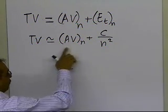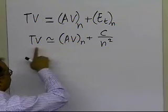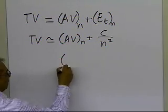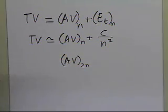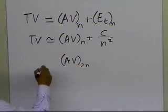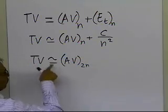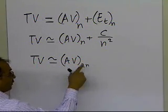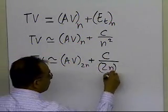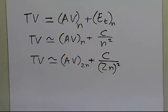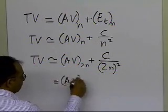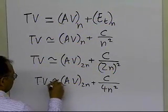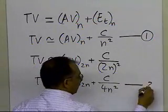To take advantage of this formula, I'm going to double the number of segments. Using the same definition, when I double the segments the true value equals the approximate value using 2n segments, plus c divided by (2n) squared, which simplifies to the approximate value at 2n, plus c divided by 4n squared. Call the first equation equation 1 and the doubled-segment version equation 2.